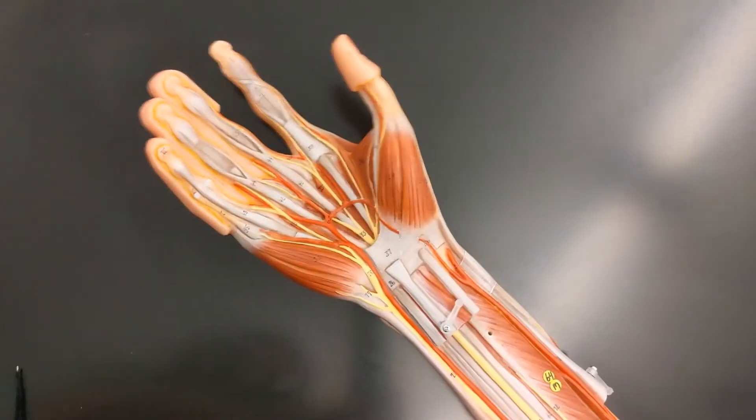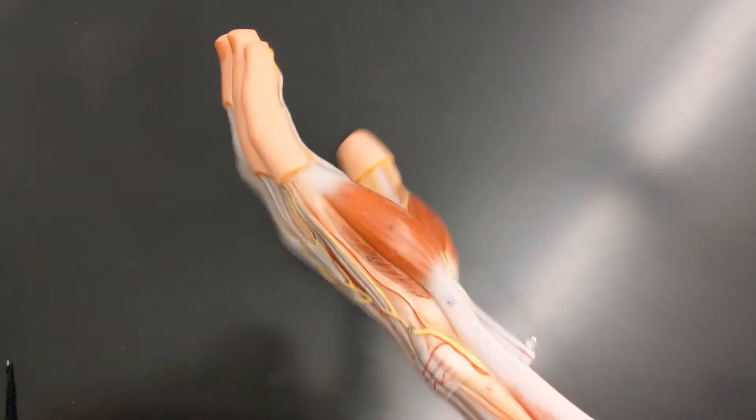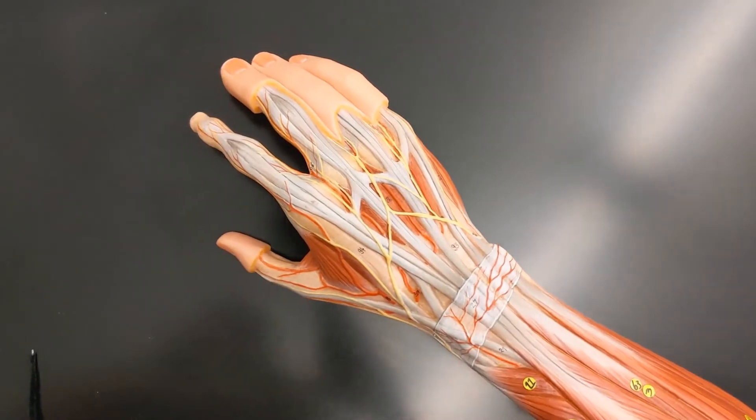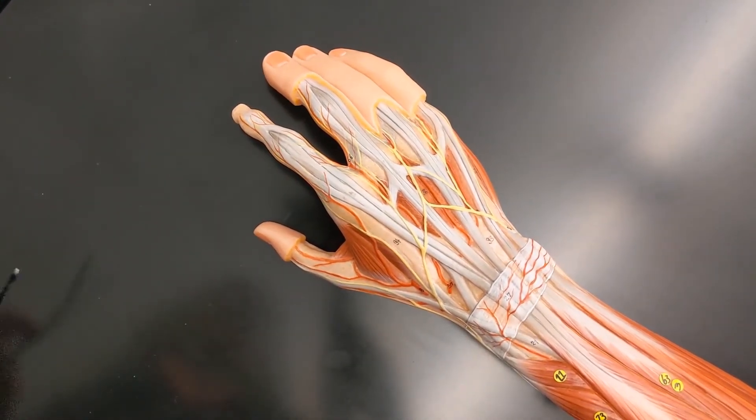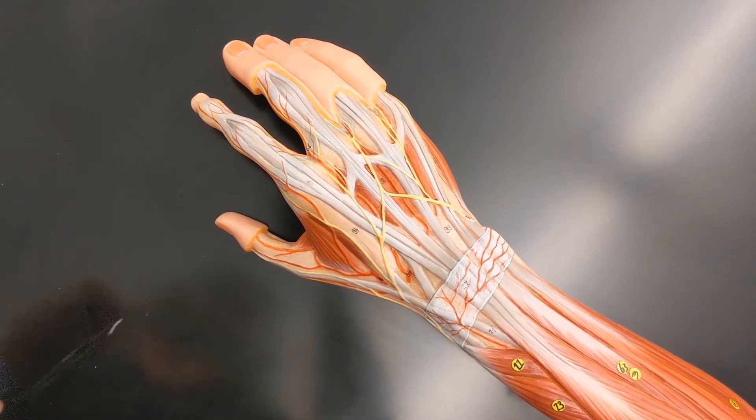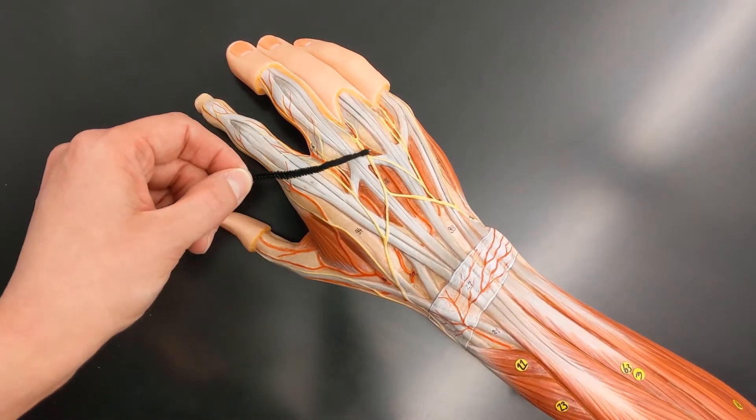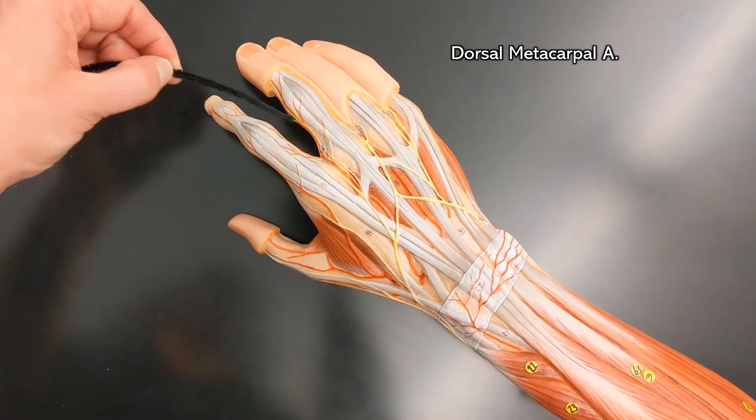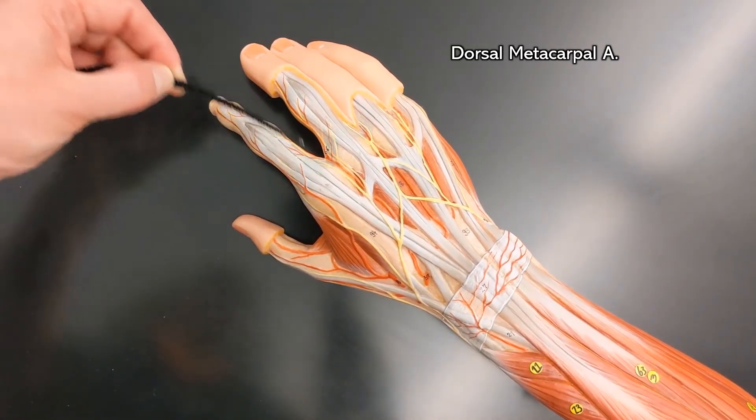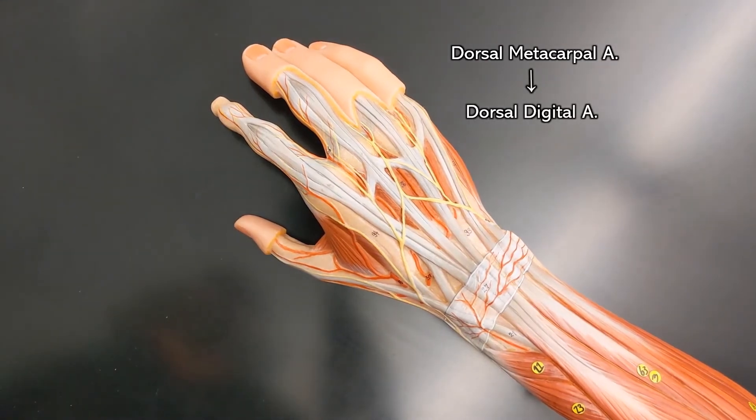Now the reason we have to specify palmar is because if you flip over, you'll see there are arteries on the other side of your hand. These are the dorsal metacarpal arteries, and these on your actual fingers would be the dorsal digital arteries.